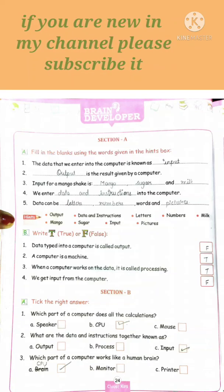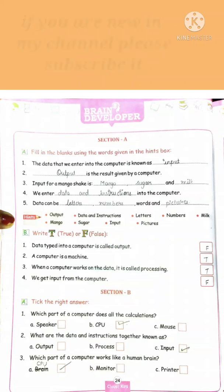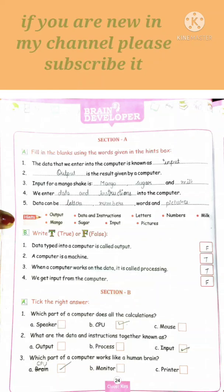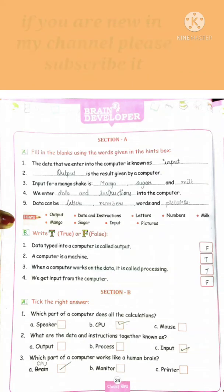Number two: a computer is a machine. You all know very well that computer is an electronic machine, so this statement is again true. Number three: when a computer works on the data it is called processing. No, wrong, so this statement is false.